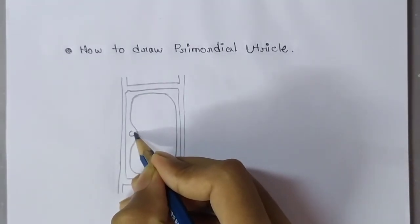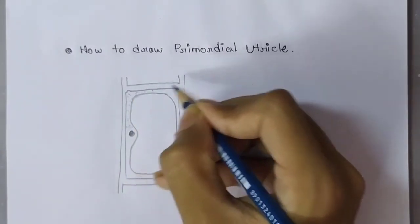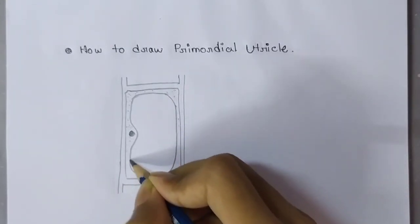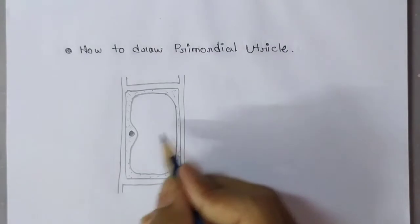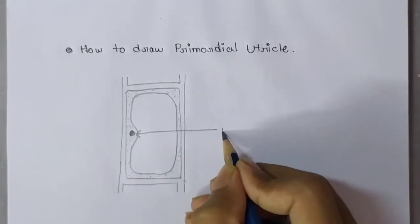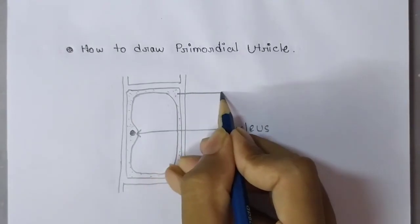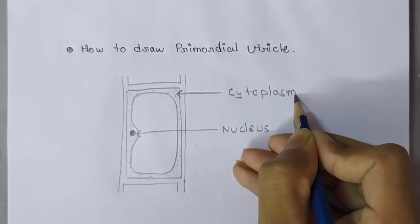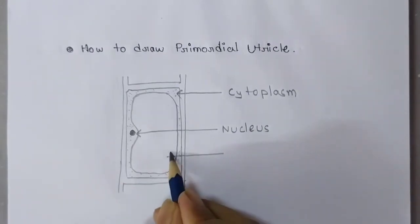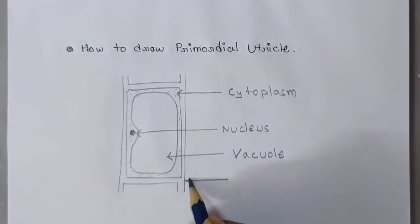Now let's draw the nucleus here inside the notch and darken it. After that, make some dots on the cytoplasm so that we can easily understand. Now let's label it. This is the nucleus. This is the cytoplasm. This is the back wall. And this is the cell wall.